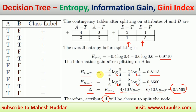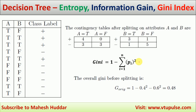Now we will try to identify how to calculate the gain in terms of Gini index. The Gini is always equivalent to 1 minus summation of pi squared, where pi is the probability of the ith class. So Gini equals 1 minus (0.4 squared) minus (0.6 squared), which equals 0.48. This is the original Gini.